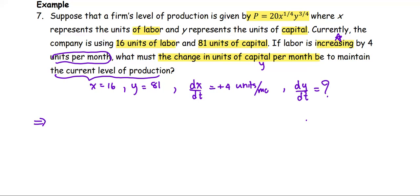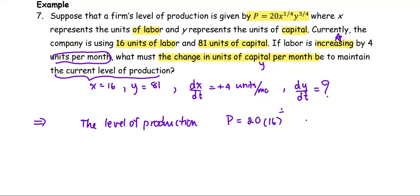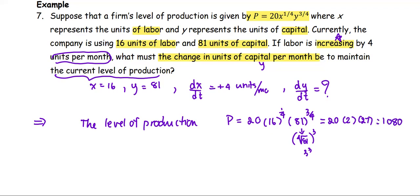We are going to look at the level of production at the current x and current y. So p equals 20 times 16 to the power 1/4 times 81 to the power 3/4. Simplifying: the fourth root of 16 is 2, and 81 to the power 3/4 is the fourth root of 81 raised to the power 3, which is 3 cubed, equals 27. So we multiply 20 times 2 times 27, giving us 1080 as the current level of production.